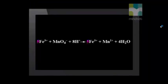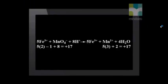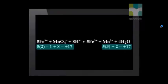Let's check the number of atoms first. We have 5 iron atoms on the left and 5 on the right. There is 1 manganese atom on each side. There are 4 oxygen atoms on each side, and there are 8 hydrogen atoms on each side. So the number of atoms is balanced. Since the charges on both sides add up to +17, the charges also balance.